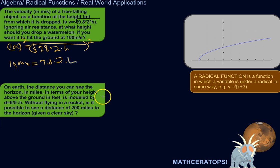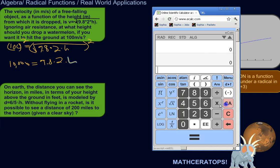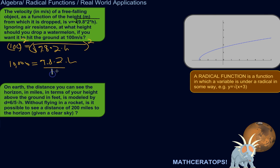So, 9.8 times 2 is 19.6. Right, 9.8 times 2, 19.6. So, we'll divide both sides by 19.6. Divide by 19.6. We should get our height.